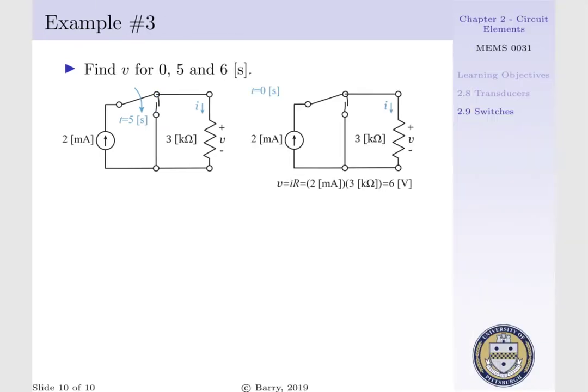To analyze our initial condition at time T equals 0, we see that our 2 milliamp source is connected to our 3 kilo-ohm resistor, such that we can determine our voltage drop across said resistor via Ohm's Law, where V equals IR, or 2 milliamps times 3 kilo-ohms, or 6 volts.